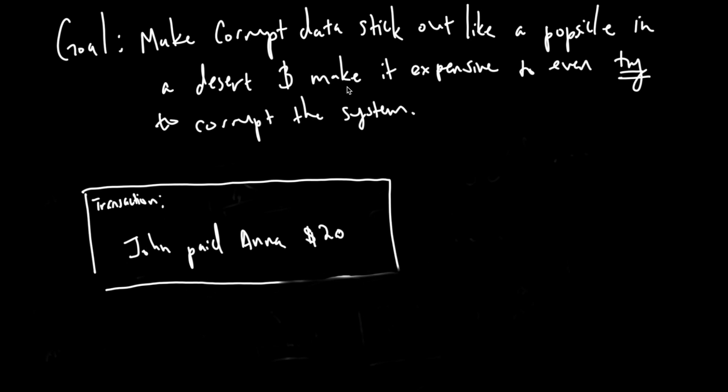This is part two of the Bitcoin fundamentals. You can find the link to part one in the video description. Our goal is to make corrupt data stick out like a popsicle in a desert, and make it expensive to even try to corrupt the system.